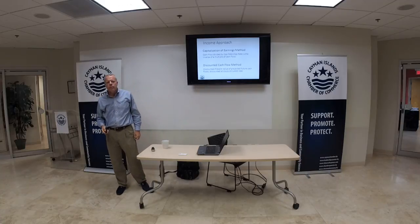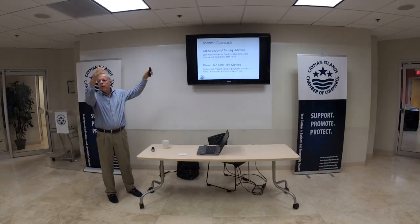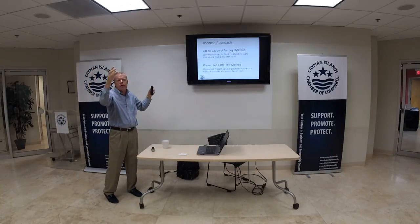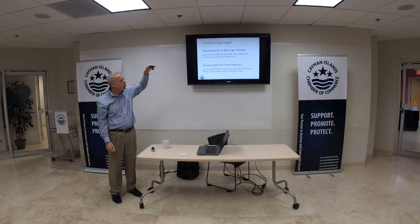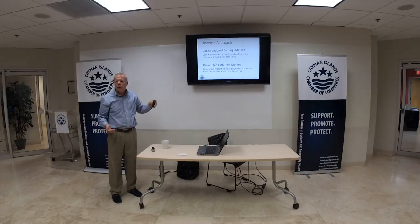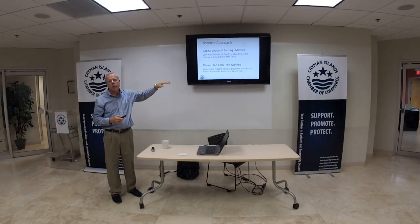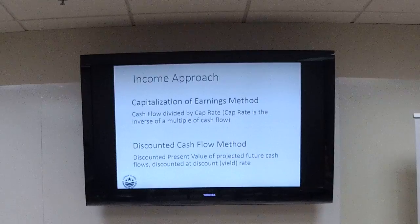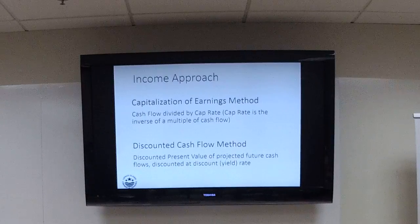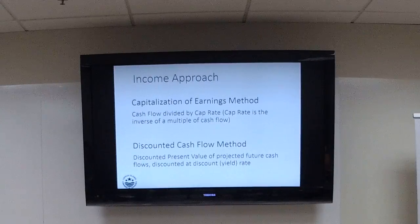Also known as the discounted future earnings method. It looks like year one through seven or more: starting at the top line you've got revenues, cost of goods sold, gross profit, operating expenses, and EBITDA — earnings before interest, taxes, depreciation, and amortization. Then you have non-cash charges like depreciation and amortization, taxes, and cash flow items. You come down to a cash flow for years one through five or ten, plus that final year you're going to capitalize. You bring all of that back to present value at a discount rate, and that's your value.